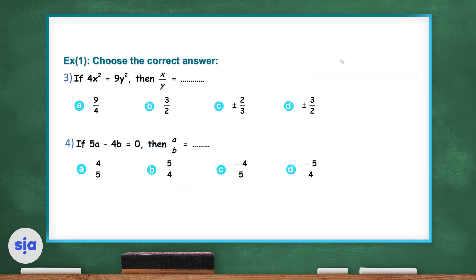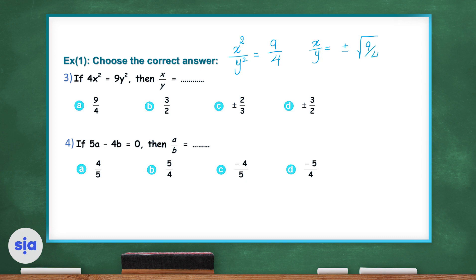In question 3, if 4x squared equals 9y squared, then what is x over y? In order to find x over y, you first find x squared over y squared. So x squared over y squared equals 9 over 4. If you want to remove the power of 2, you write that x over y equals positive or negative square root of 9 over 4, which is positive or negative 3 over 2. The right choice is choice D.